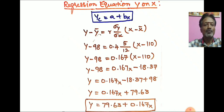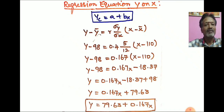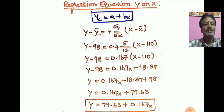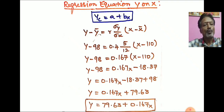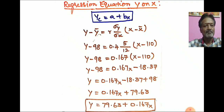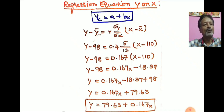Taking the numerical value 98 from the left-hand side to the right-hand side and changing the sign to plus: y equal to 0.167x minus 18.37 plus 98, which gives y equal to 0.167x plus 79.63. Writing in standard form, the fitted regression equation of y on x is: y equal to 79.63 plus 0.167x.